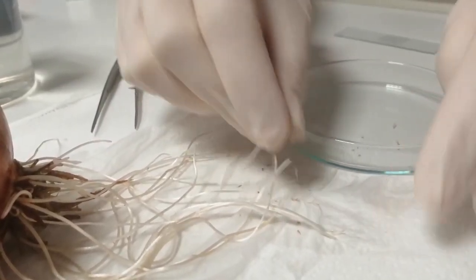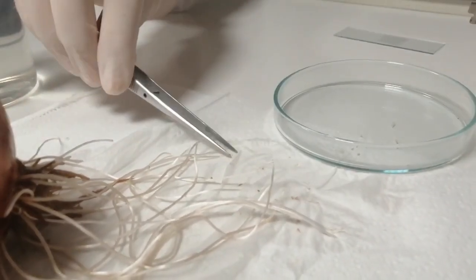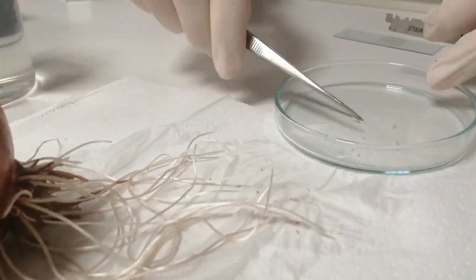We cut the tips of the onion roots with a blade and place them into the watch glass.